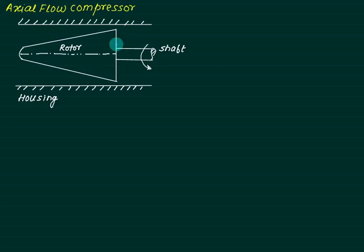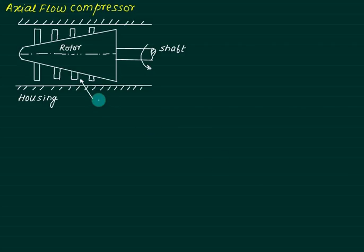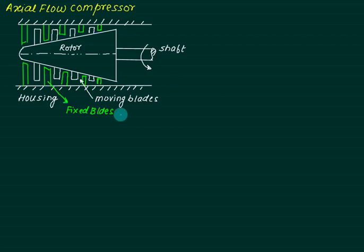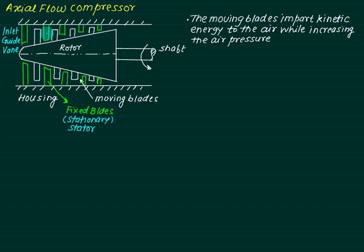An axial flow compressor basically consists of a rotor connected to a shaft. As the shaft rotates, the rotor also rotates. The entire assembly is kept in a housing. Certain blades are mounted on the rotor shaft, called moving blades, while blades mounted on the housing are called fixed blades, also known as stationary blades or stator blades. The first blade is called the inlet guide vane.